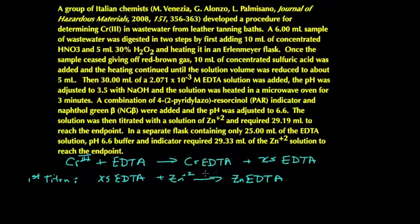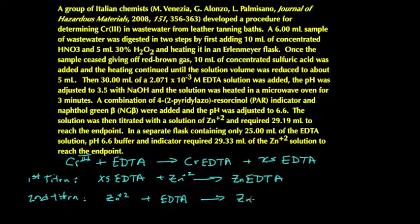And that helps us to determine the excess moles of EDTA. The difference between that and the original moles of EDTA tells us how much complexed with the chromium. But we need a second titration because we need to know the zinc concentration. So we take a fresh aliquot of EDTA. It gives us a known number of moles to titrate against the zinc to essentially standardize the zinc concentration.